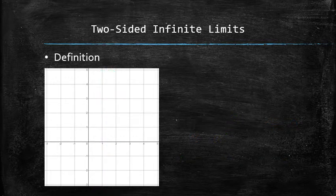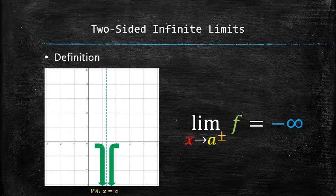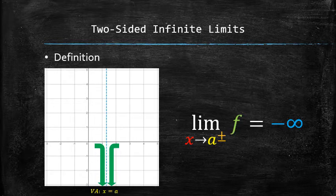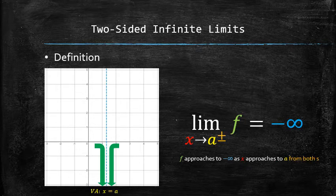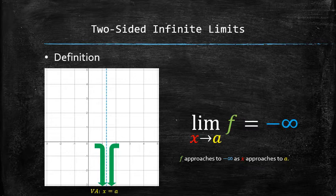We associate the following behavior near vertical asymptote x equals a with the following limit statement called a two-sided infinite limit. We say f approaches to negative infinity as x approaches to a from both sides. Frequently, we omit the plus-minus notation and simply say f approaches to negative infinity as x approaches to a.